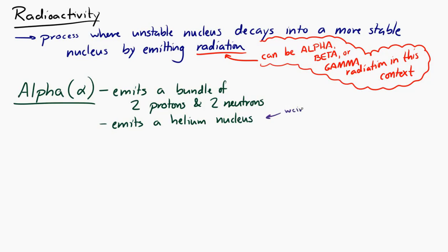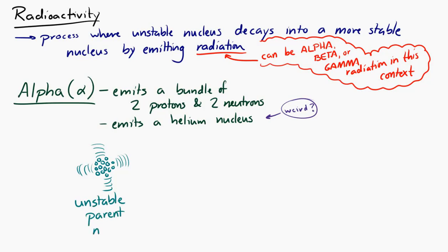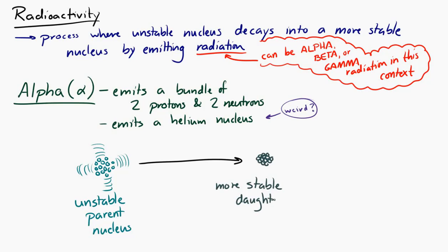Don't worry about that right now — we're not going to get into it. Just know that if you start out with an unstable nucleus, called a parent nucleus, and it decays by alpha radiation, then after the decay you're left with a more stable nucleus called a daughter nucleus and an alpha particle. The alpha particle contains two protons and two neutrons, and it often moves quite fast after it is emitted.